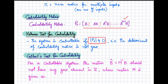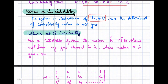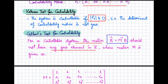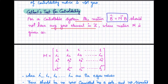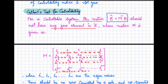The second test to determine controllability is the Gilbert test. Gilbert stated that for a controllable system, the matrix B_cap, defined as M⁻¹ times B, should not have any zero element in it. If there is any zero element in matrix B_cap, then the system is not fully controllable. Matrix M is a matrix in which the first row consists of ones and the second row consists of the eigenvalues.